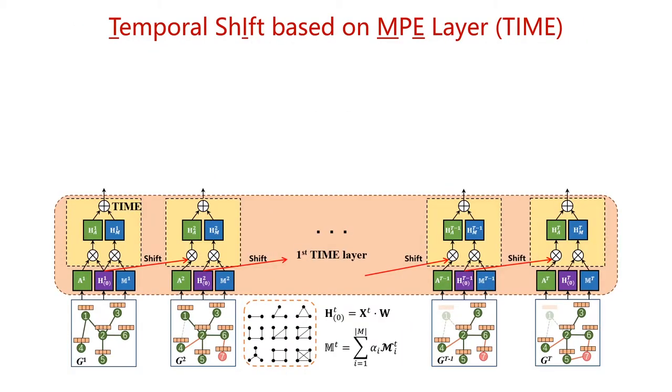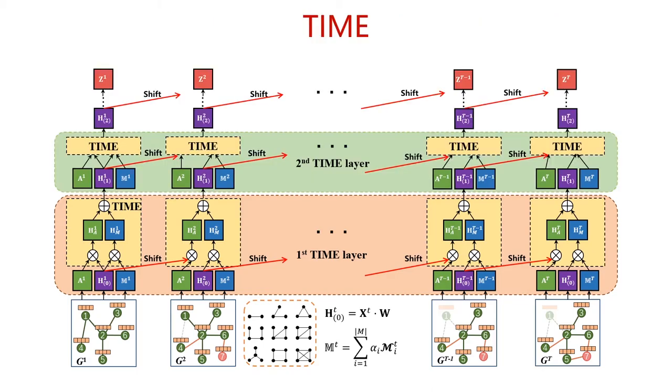Now we can use the shift operation with the graph neural network MPE to capture the dynamics of the network. We call this dynamic graph neural network layer as TIME layer. By stacking TIME layers, we can continuously expand the receptive fields of convolution operations. From the figure, we can see that the network features of historical time steps are continually transferred to the next moment through the shift operation. In the next time step, MPE will propagate the historical features on the network, and finally realize the aggregation of the network representation in the time dimension.